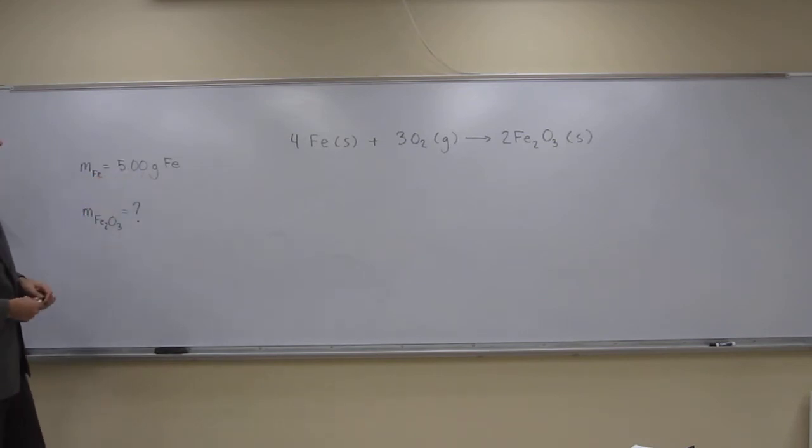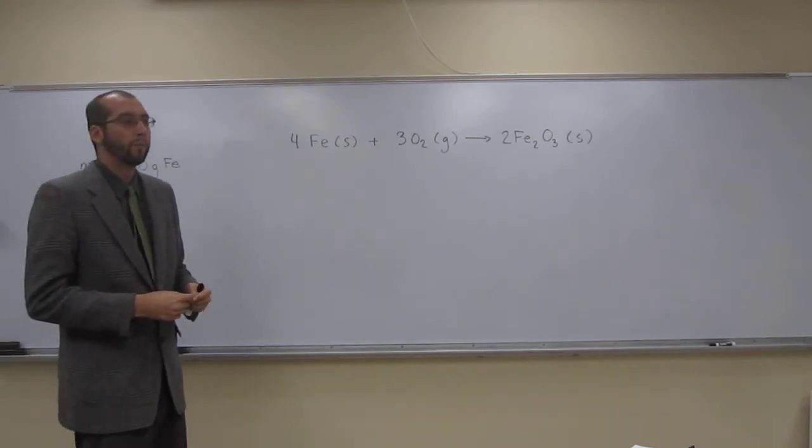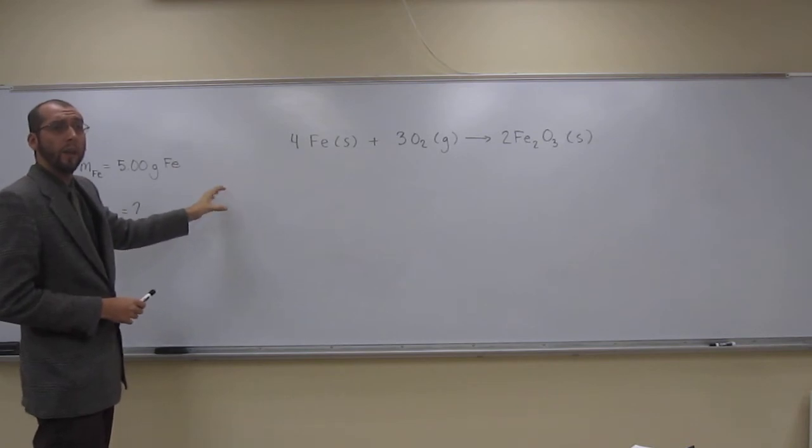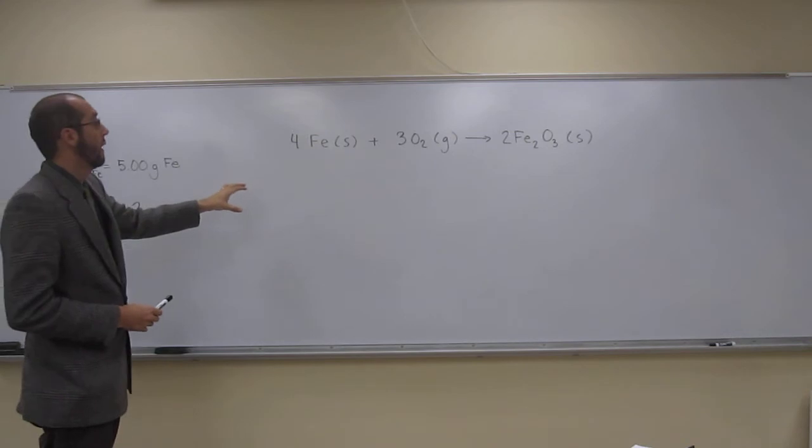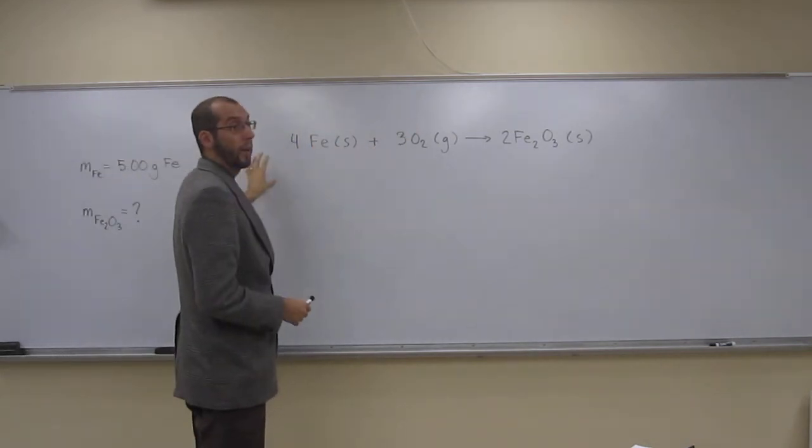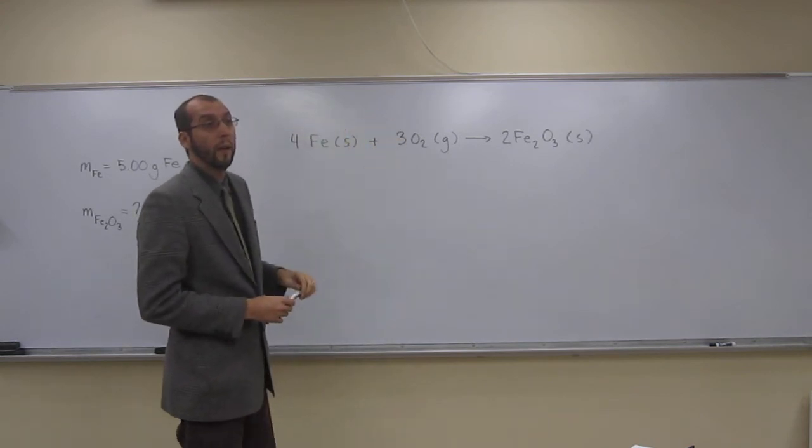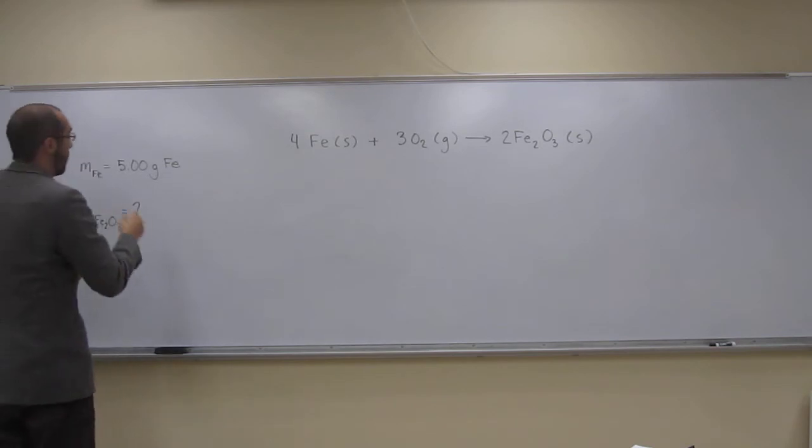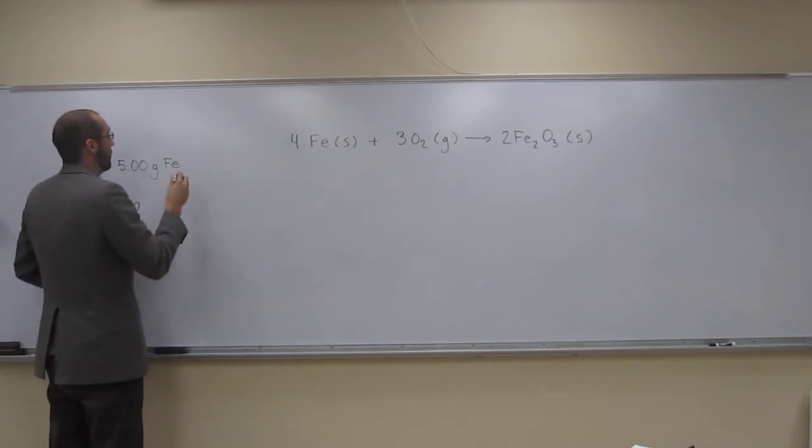So in order to do this, we're going to have to go through converting grams to moles, then use the molar ratio, moles to moles, from iron to iron three oxide. And then from there, we get the moles of iron three oxide. We're going to have to figure out the mass using the molecular weight, or the molar mass of iron three oxide.